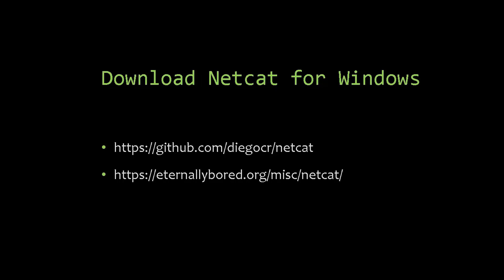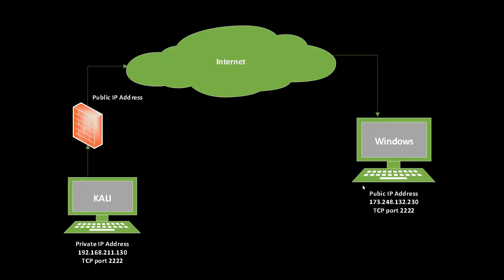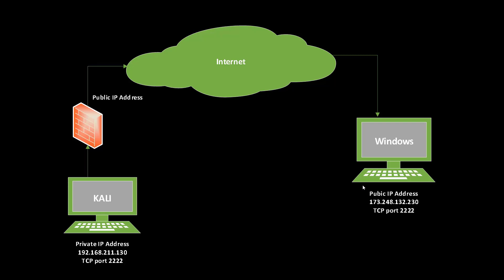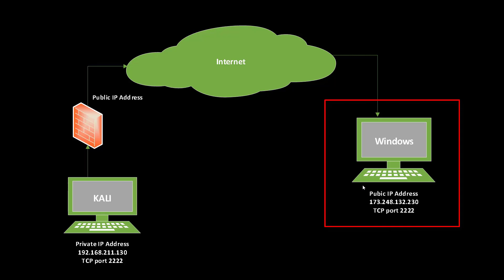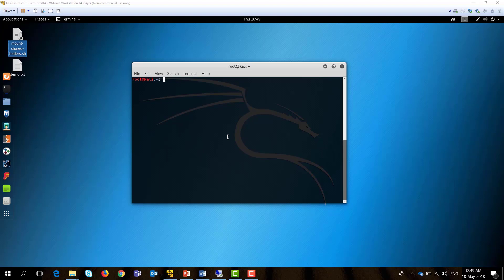Netcat is not installed by default on Windows machines, so you can go to any of the provided links and download the compiled version for Windows. In our examples, we will use a structure where the Kali machine is a local version with a private IP address — behind a firewall or router — and we will connect remotely to a Windows machine hosted on the cloud with a public IP address.